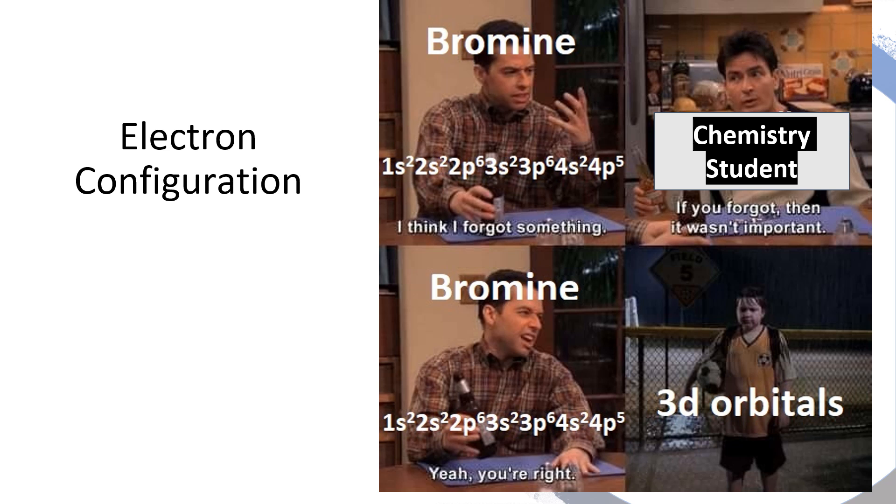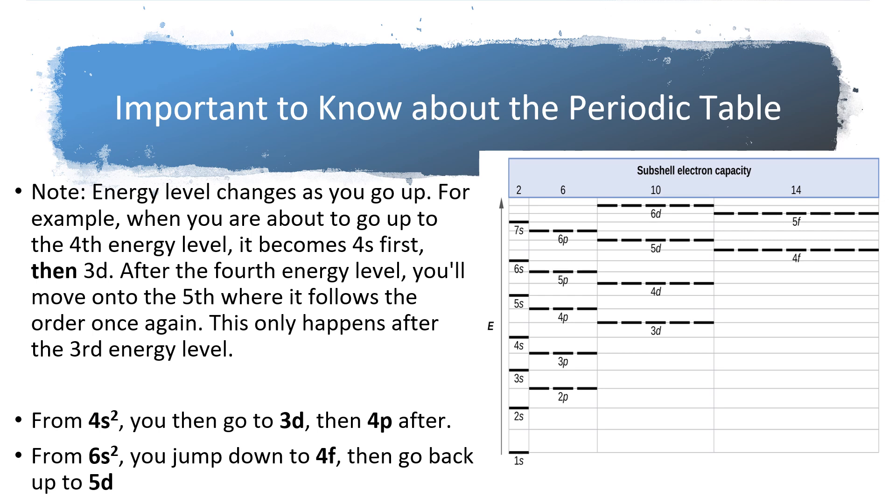Hi guys, Dr. B here. This is my lecture for electron configuration without an energy level diagram. It's important to know about the periodic table that the energy level changes as it goes up. So from 4s, like we saw in our energy level diagrams, from 4s you go to 3d, then 4p.